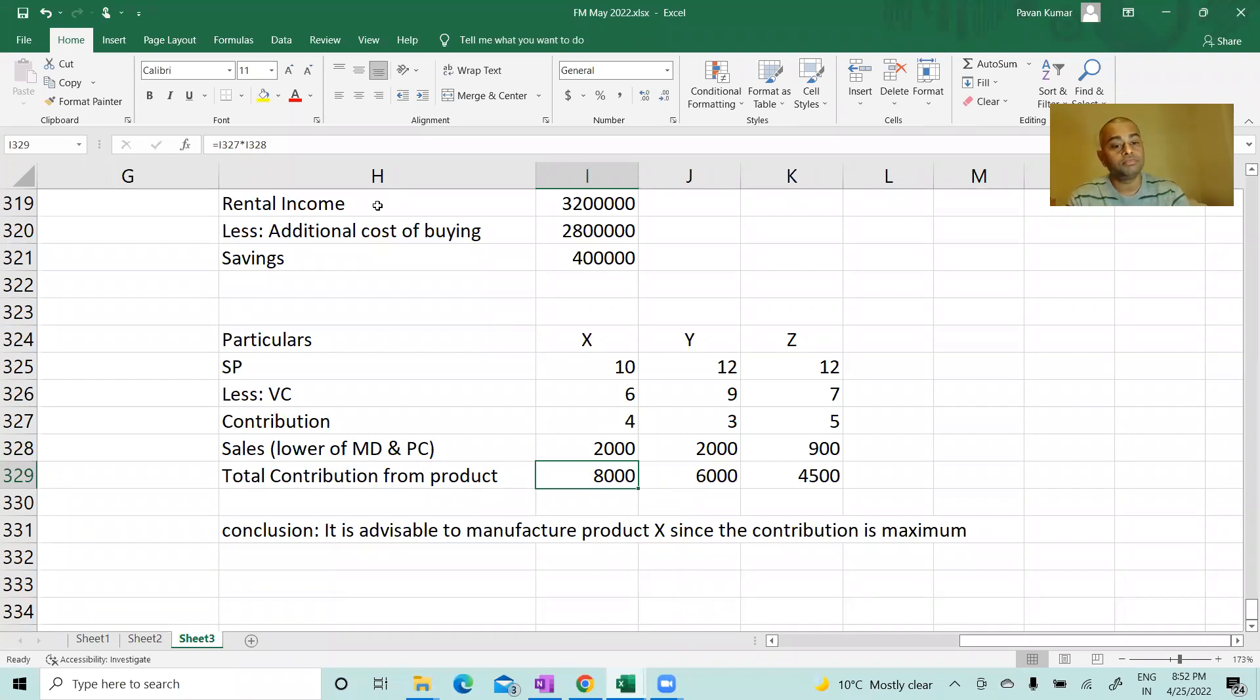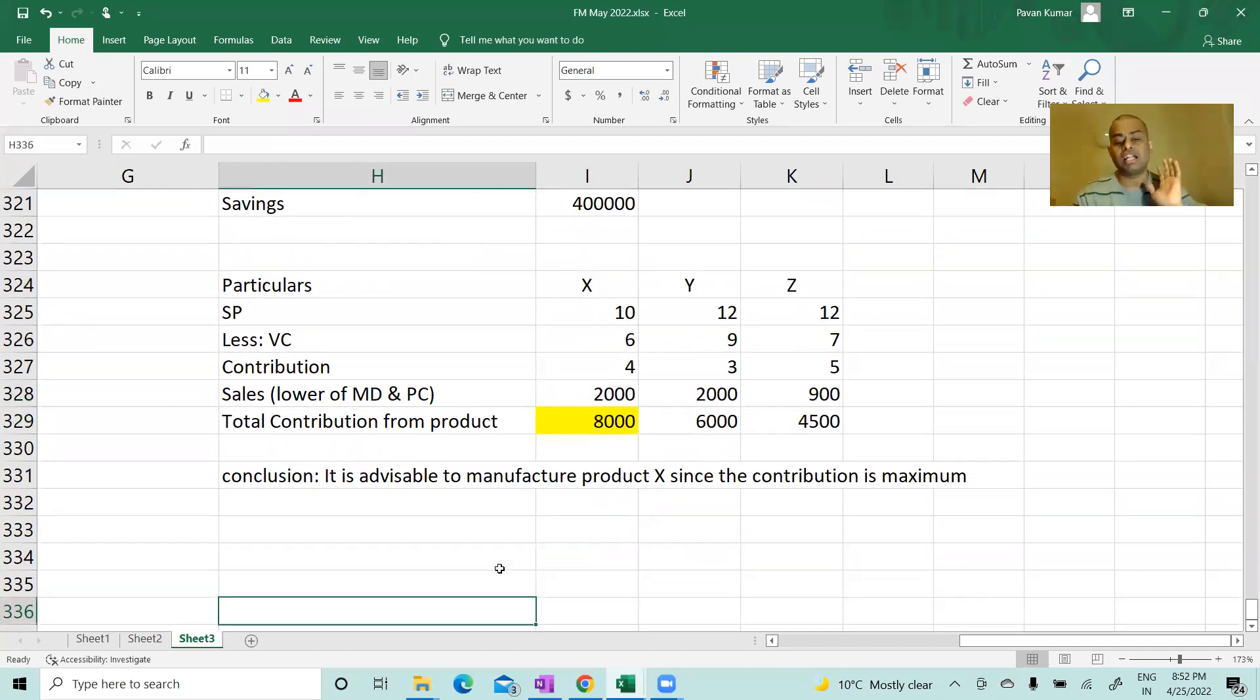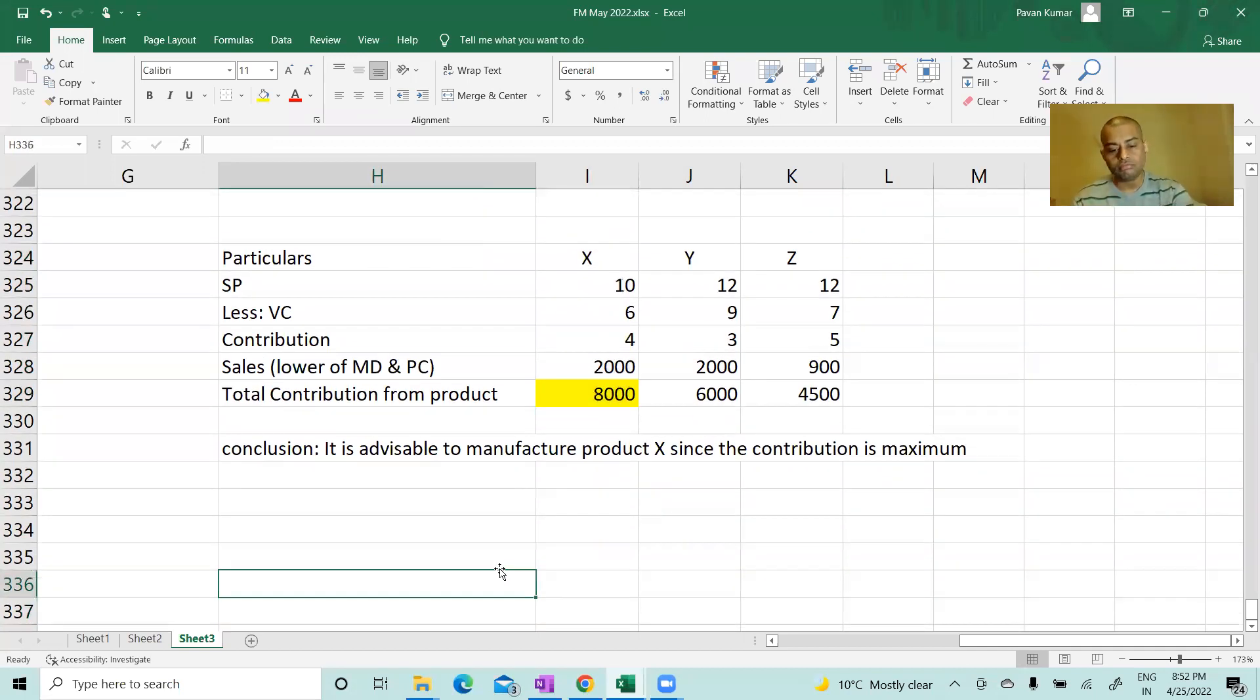But this problem is actually a stupid problem. So anyway, this is the maximum contribution you can earn. So it is advisable to manufacture product X since the contribution is maximum. Now if you are manufacturing X, what is your opportunity cost? The highest of the contribution forgone. It cannot be 6000 I am losing and 4500 I'm losing - 10,500, sir. No, no, you cannot add the contribution of all the options you are foregoing.